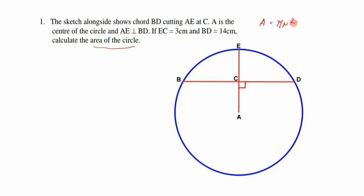We need to find the radius. From the given info we don't have the radius directly — we have EC = 3 cm and BD = 14 cm. Using the Euclidean geometry theorem that a line drawn from the center perpendicular to a chord bisects the chord, BC equals CD, giving us 7 cm each.